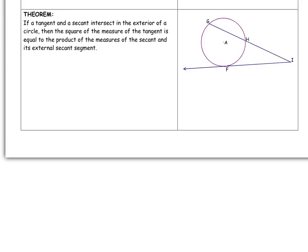So the tangent segment would be FI. I'm supposed to square FI. That's equal to the product of the measures of the secant segment. So that would be our entire secant segment GI, multiplied by the exterior part, which is just HI.